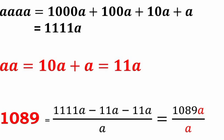So this is how we can represent 1089 using various digits and various mathematical operations like addition, subtraction, multiplication, division, etc.